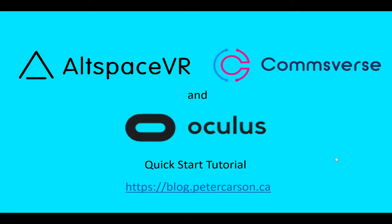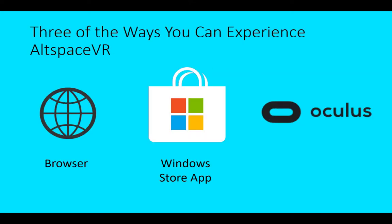Welcome to the AltspaceVR, Comsverse, and Oculus Quick Start tutorial. There are lots of different ways you can experience AltspaceVR. If you're not familiar with what it is, it's basically a virtual space where people can meet, converse with each other, see presentations, and basically experience face-to-face interactions in a virtual space. The three ways we're going to talk about today are: first, through a browser; second, through the Windows Store app; and third, through the various Oculus products.